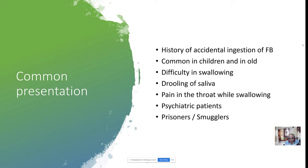If the patient happens to be a child, the mother or caretaker will give the history. Foreign body ingestion is actually more common in children than in adults because children are very curious and want to taste whatever gets into their hands. It is very common in toddlers. These patients come to us with difficulty in swallowing — so much so that they won't be able to swallow even saliva, causing drooling.